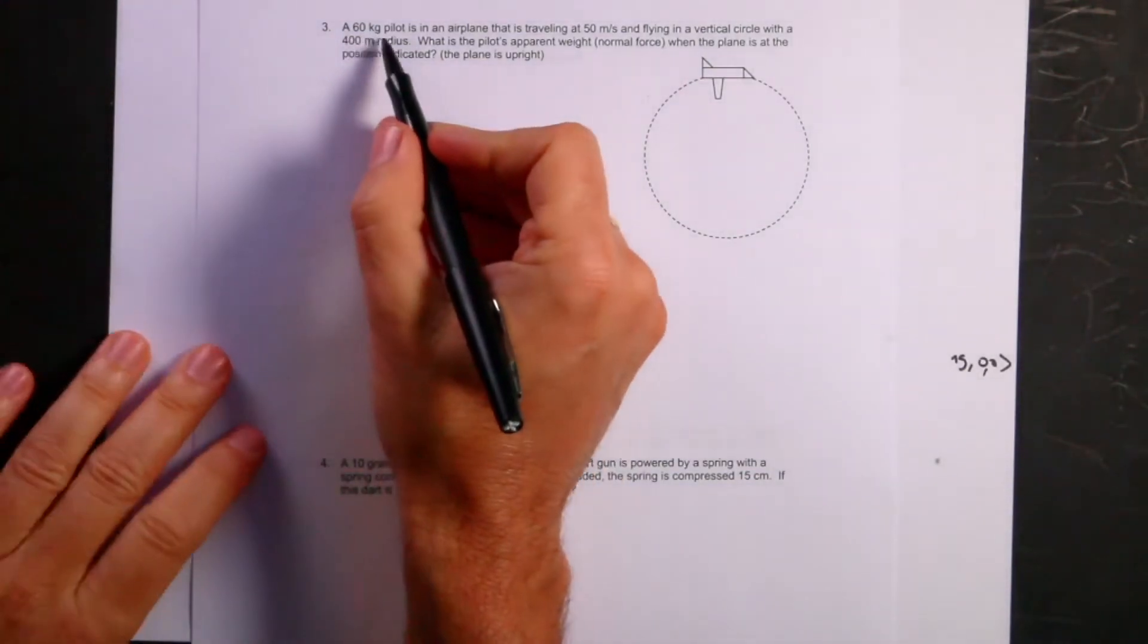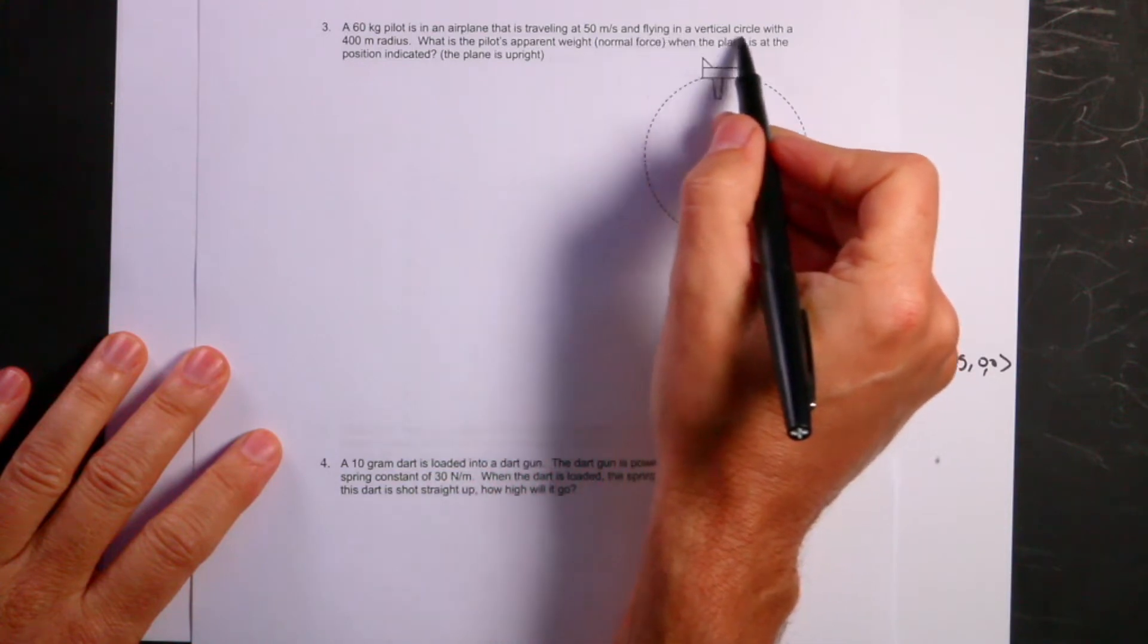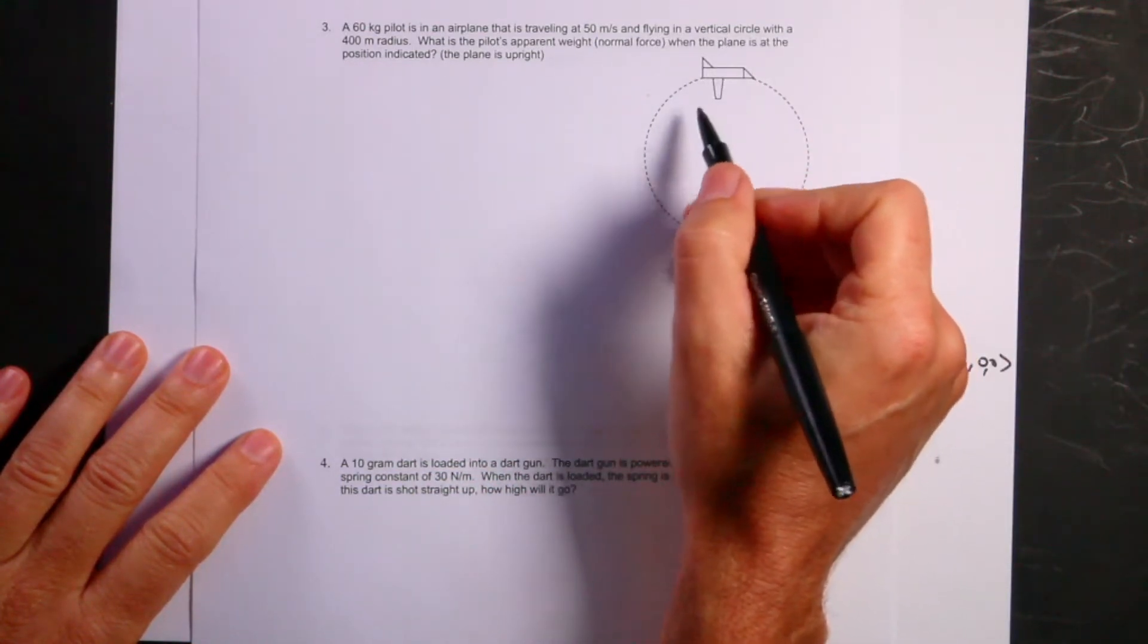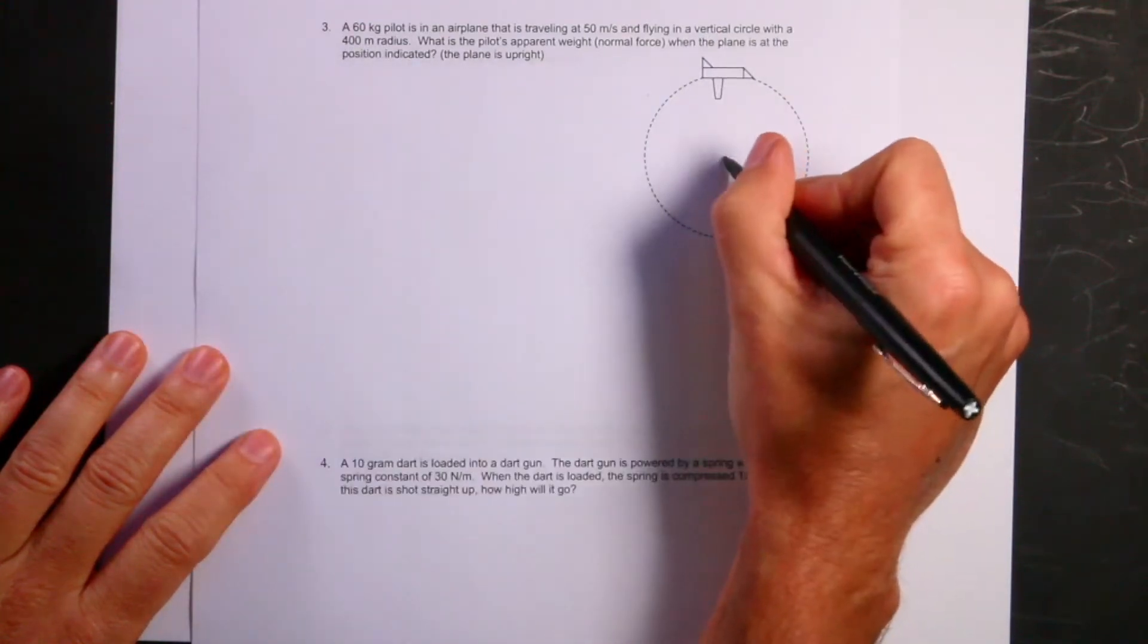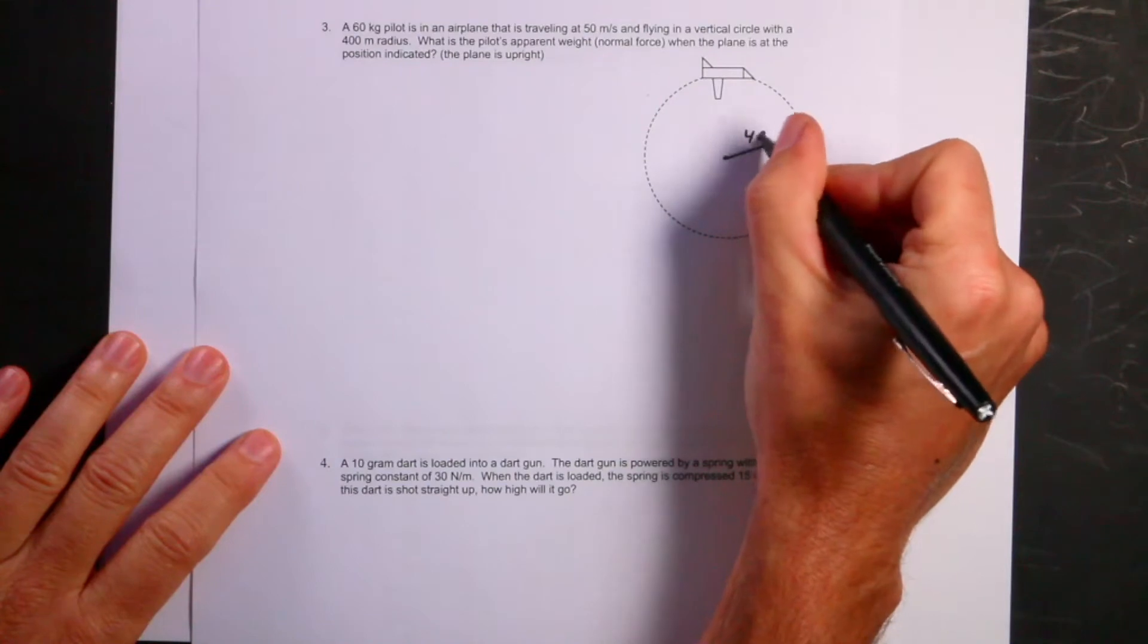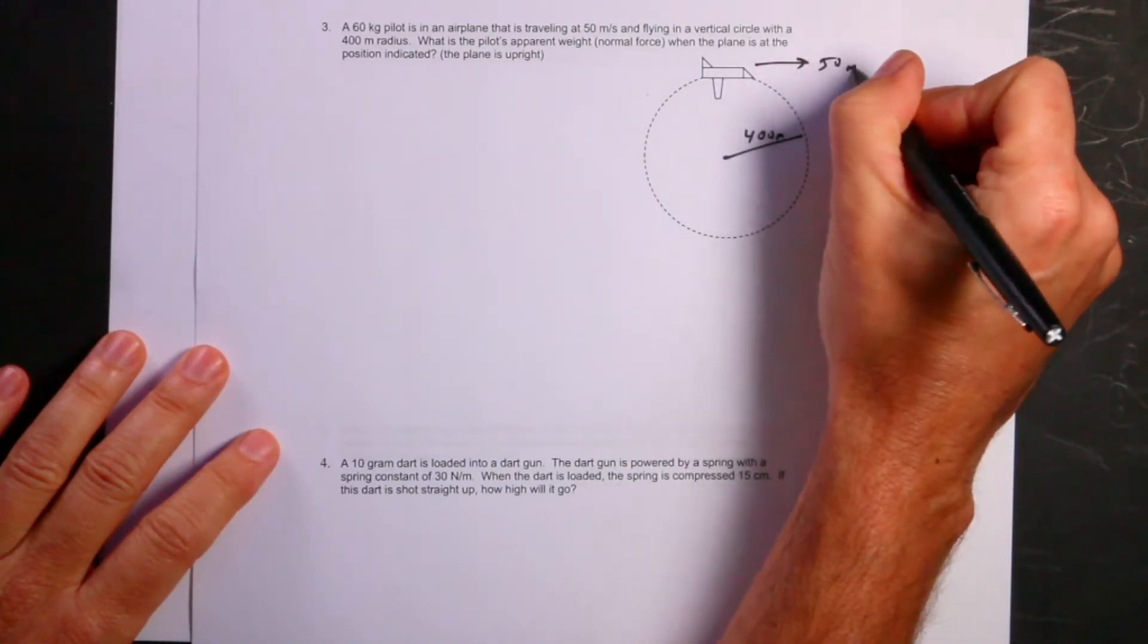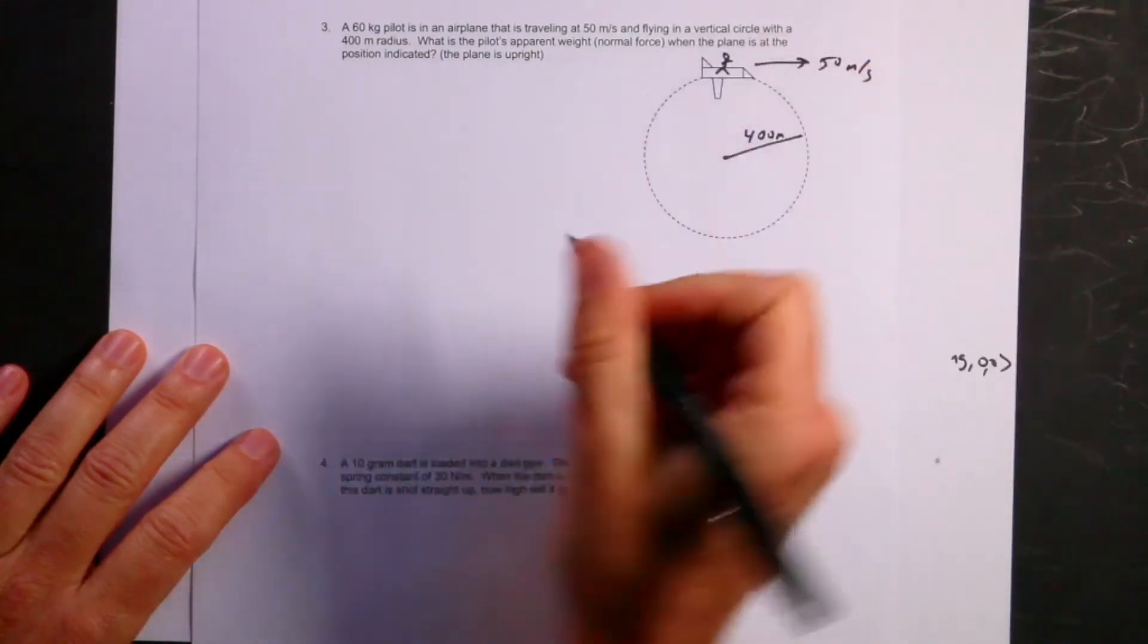A 60-kilogram pilot is in an airplane that is traveling at 50 meters per second and flying in a vertical circle. Okay, so I drew a picture. Look at my plane. You like that? Not the best plane. But I drew it myself with a 400-meter radius. So let's just put some stuff in here. That's 400, and this is 50 meters per second. And the pilot's in there, too. Right there, 60 kilograms.